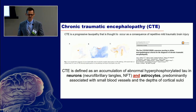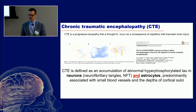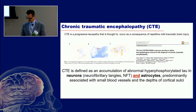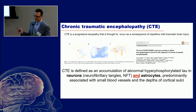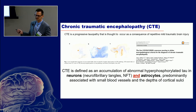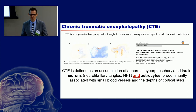Currently CTE is a neuropathologic term thought to occur as a consequence of repetitive mild traumatic brain injury. The current definition is that abnormal tau accumulates in neurons and astrocytes — and importantly, this happens mostly in the depths of the sulci, or at least it is prominent there.